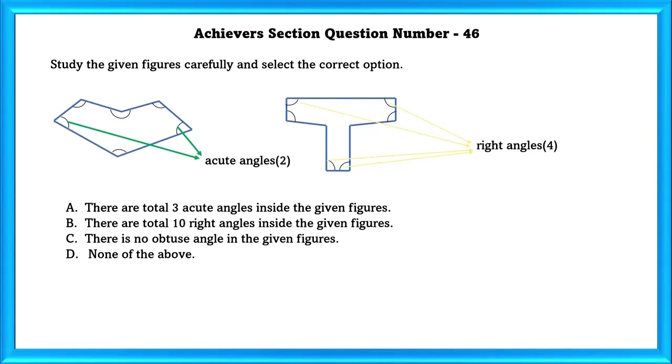C: There is no obtuse angle in the given figure. As we can see, there are total of 5 obtuse angles in the figure. So, this statement is also false.